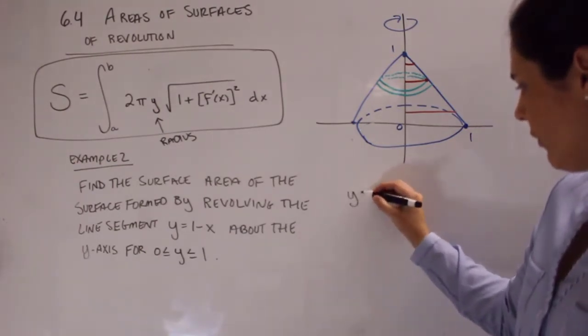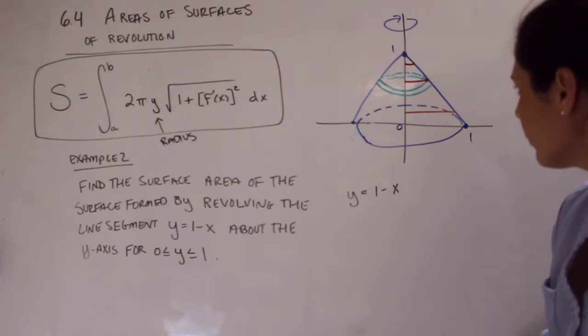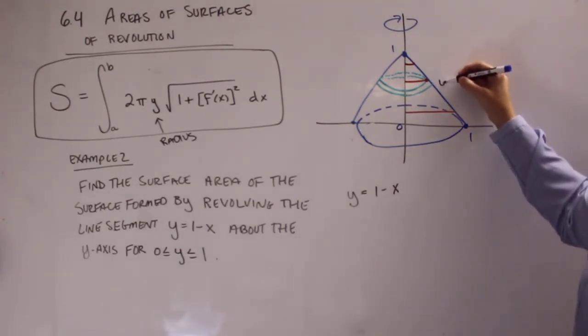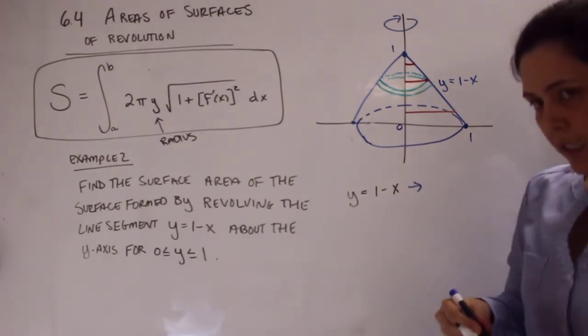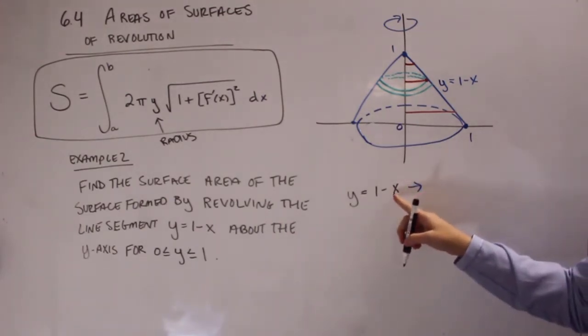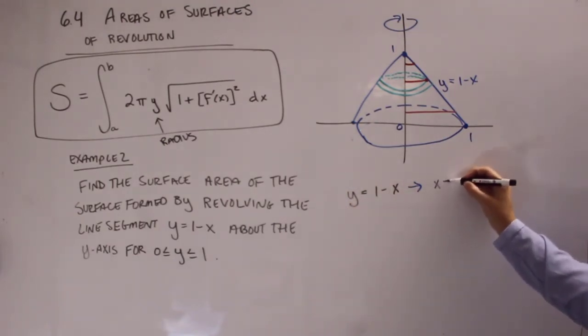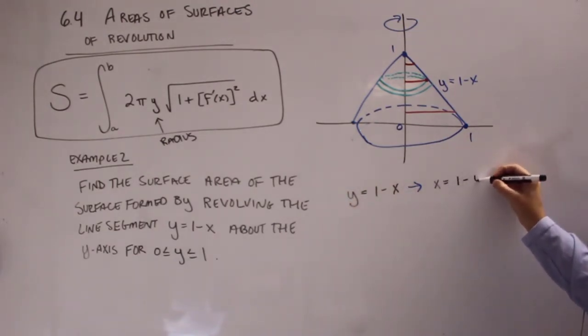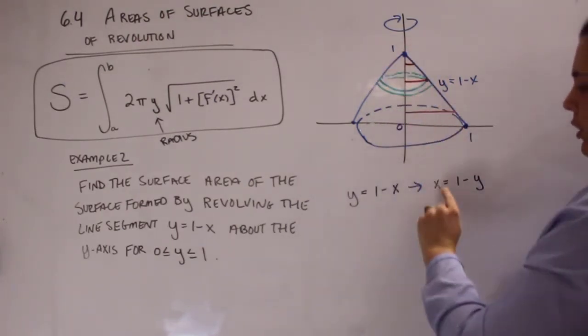From here, the fact that y was 1 minus x, which is this blue line that we're revolving. So this blue line was y equals 1 minus x. Well, the question just becomes, well, what is x? So really quick steps. Just add x to both sides and subtract y. So x equals 1 minus y.